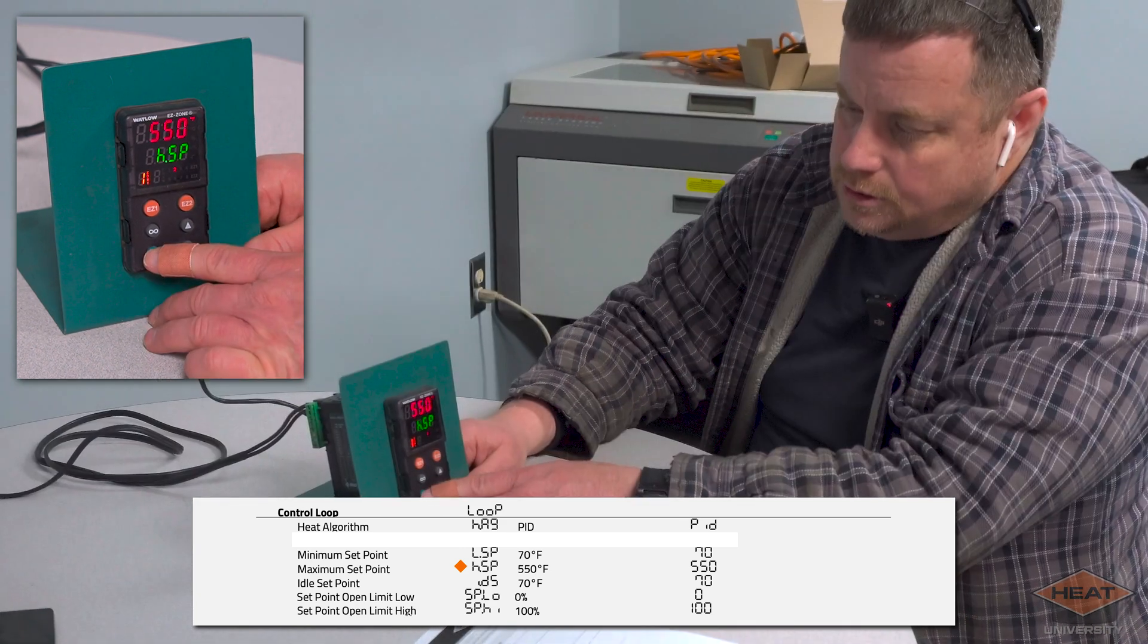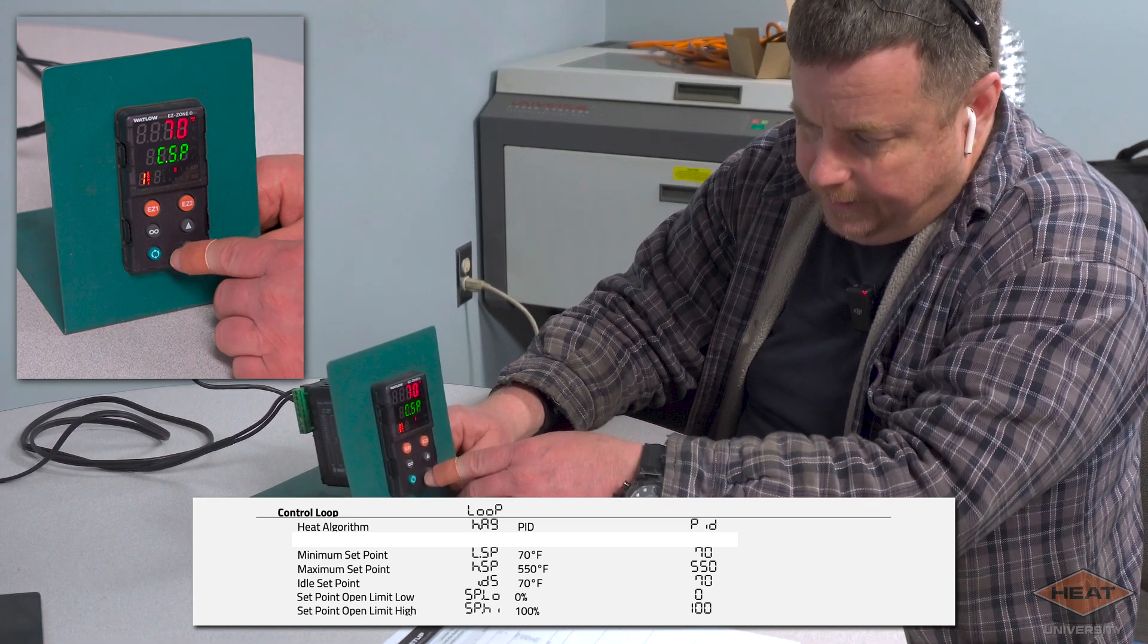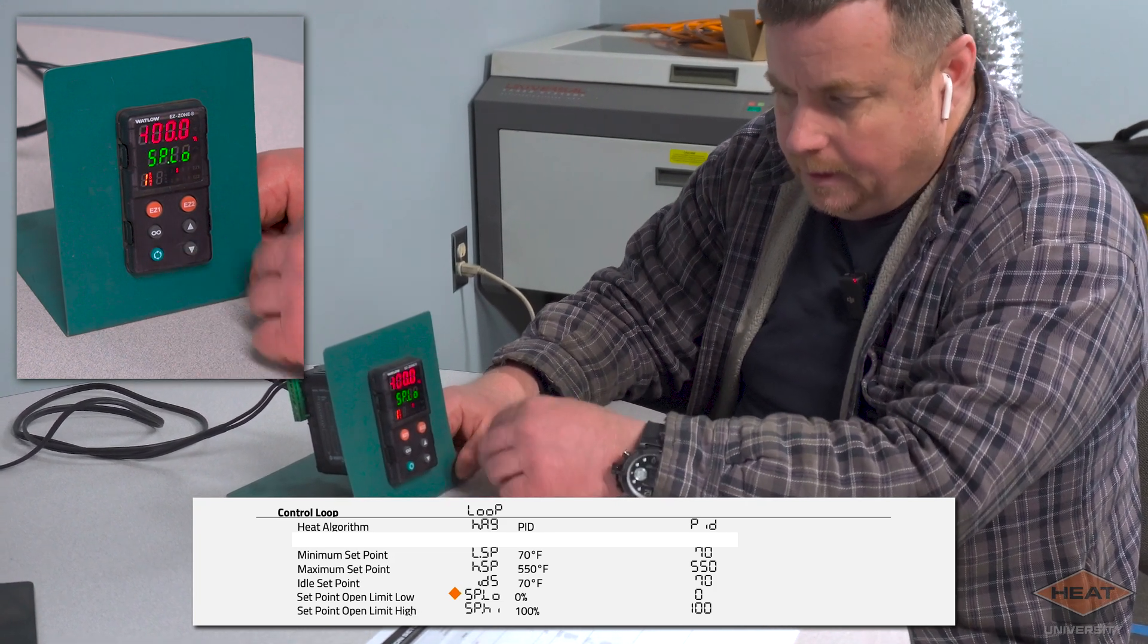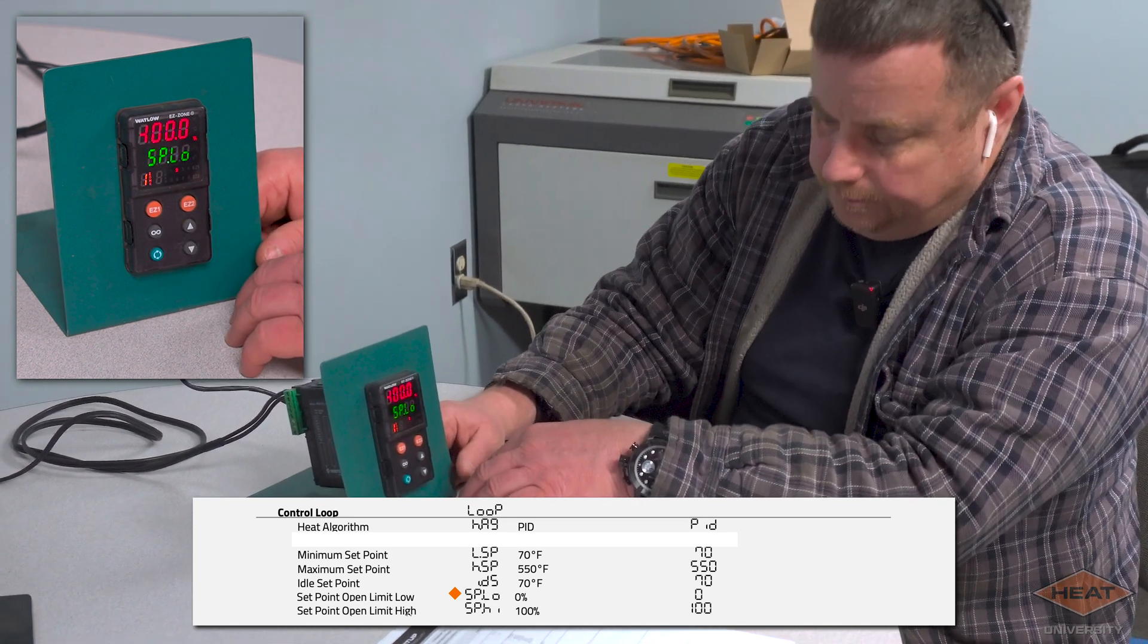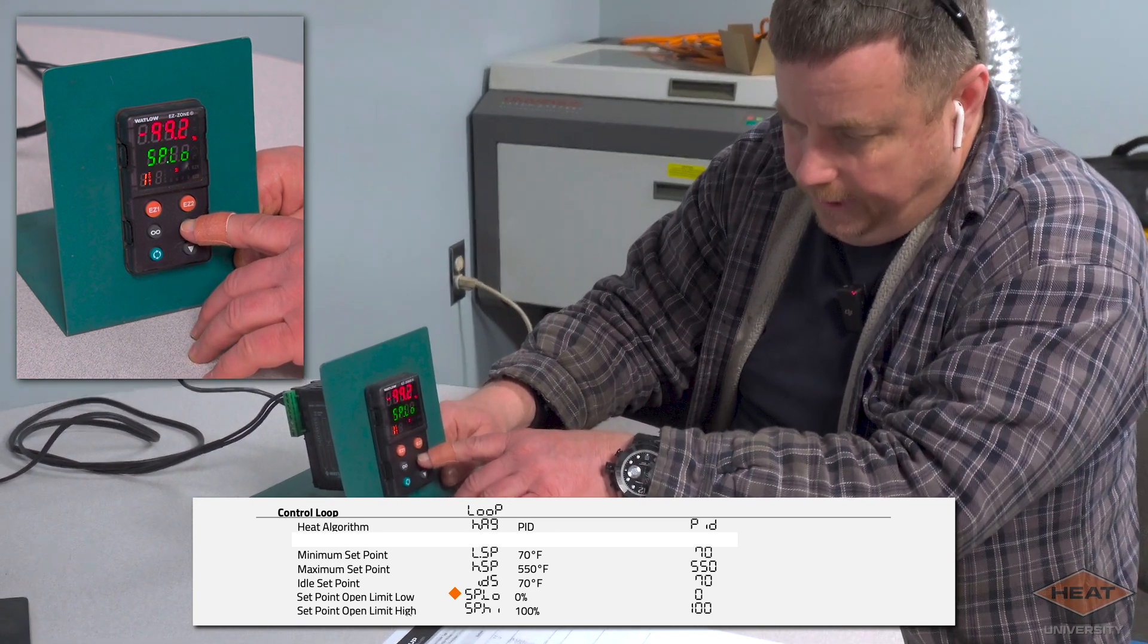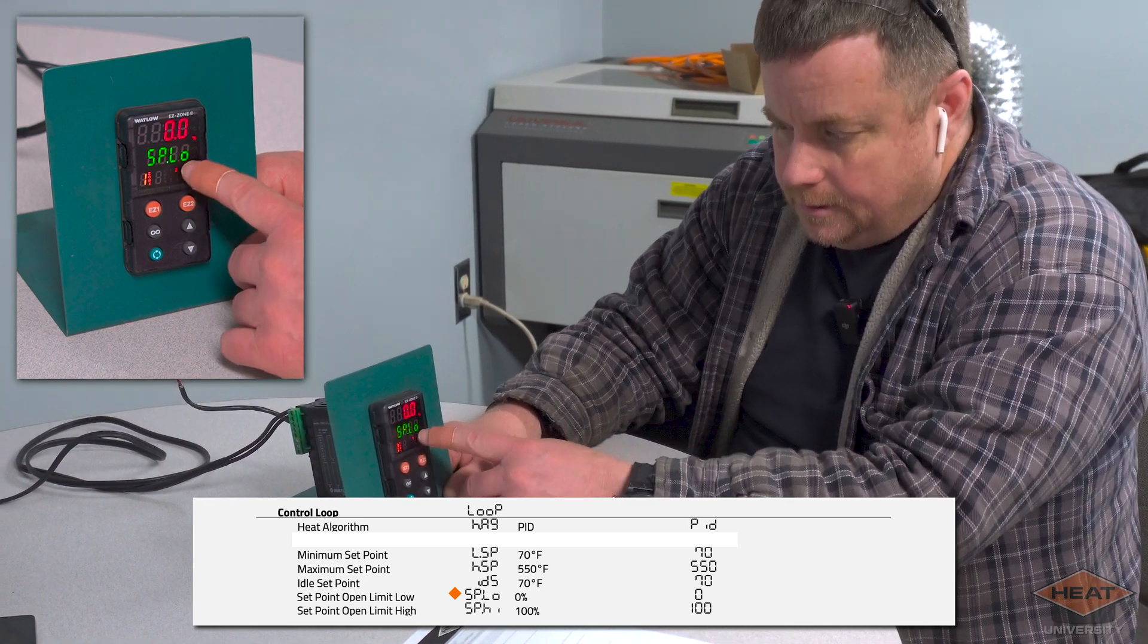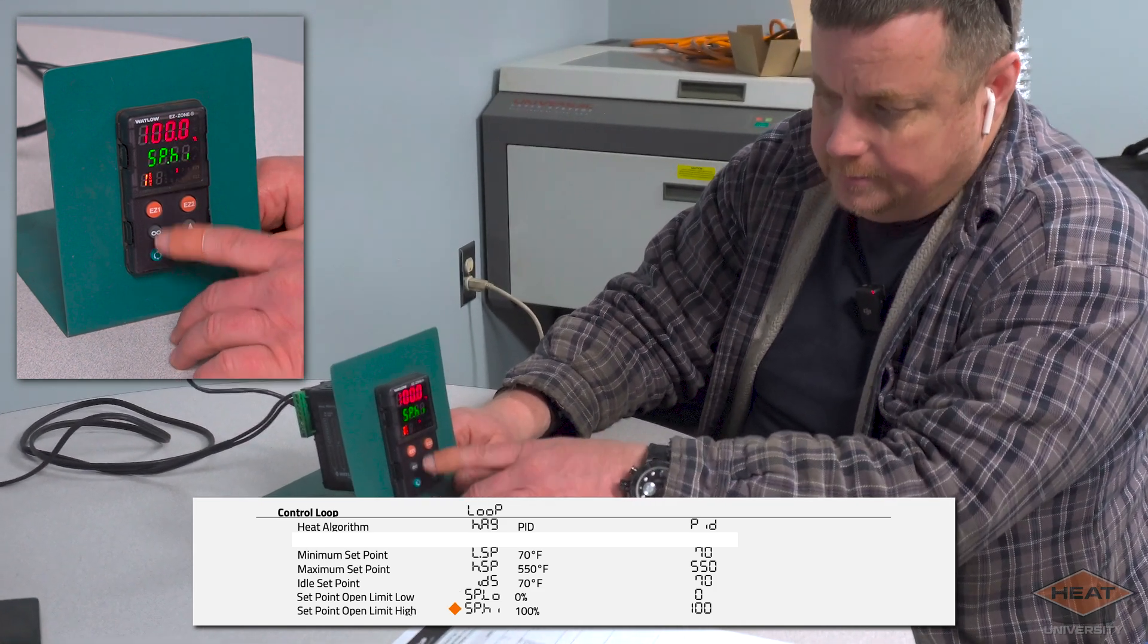So it's 550. We're going to cycle that again. That's our current set point. I usually just make that 70, and then our idle set point I just make 70 as well, just to keep things consistent. Now our set point low, it comes up as minus 100 percent. If this was cooling, we would leave that alone. Since it just has heat, we're going to make this zero. So our set point low is zero, our set point high is 100 percent.